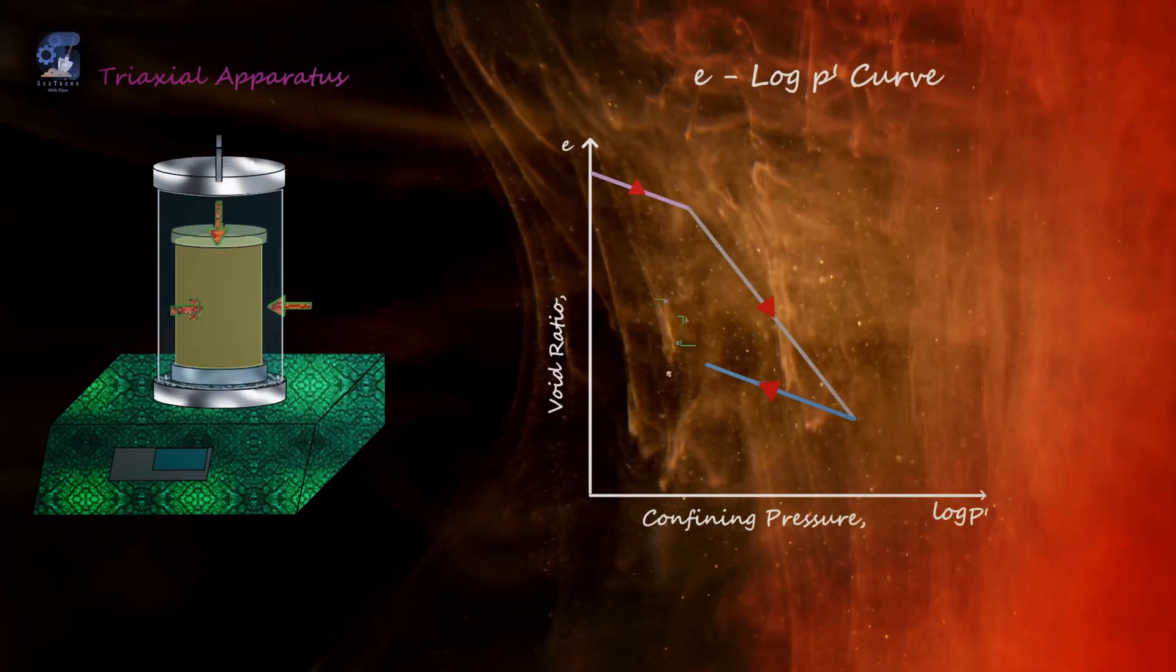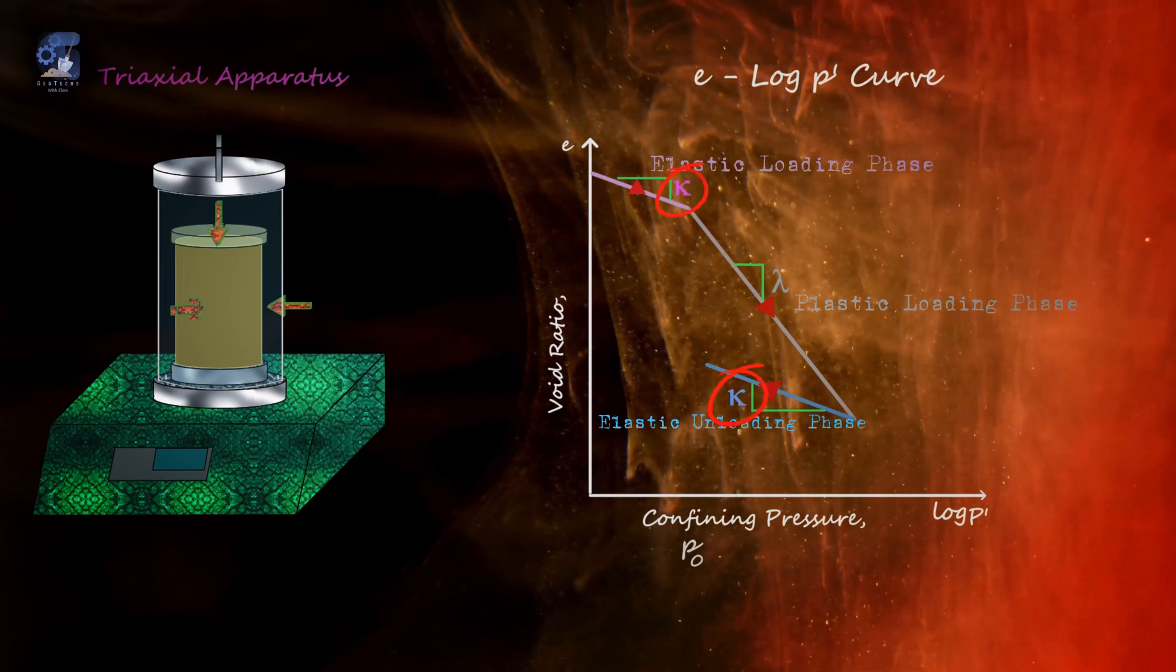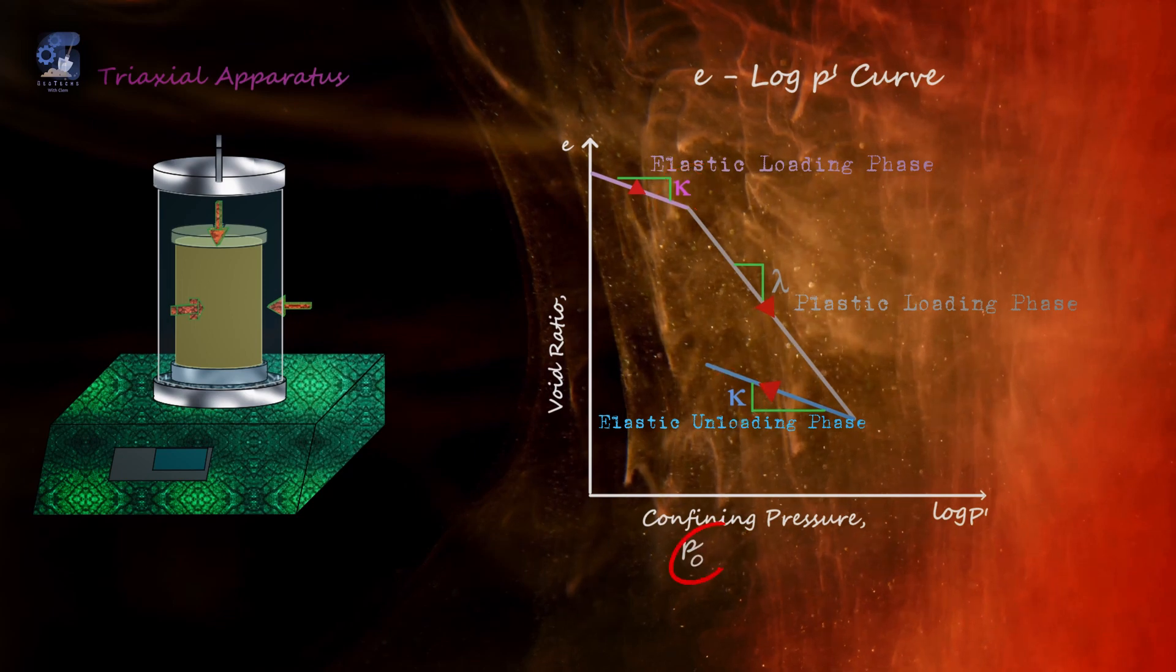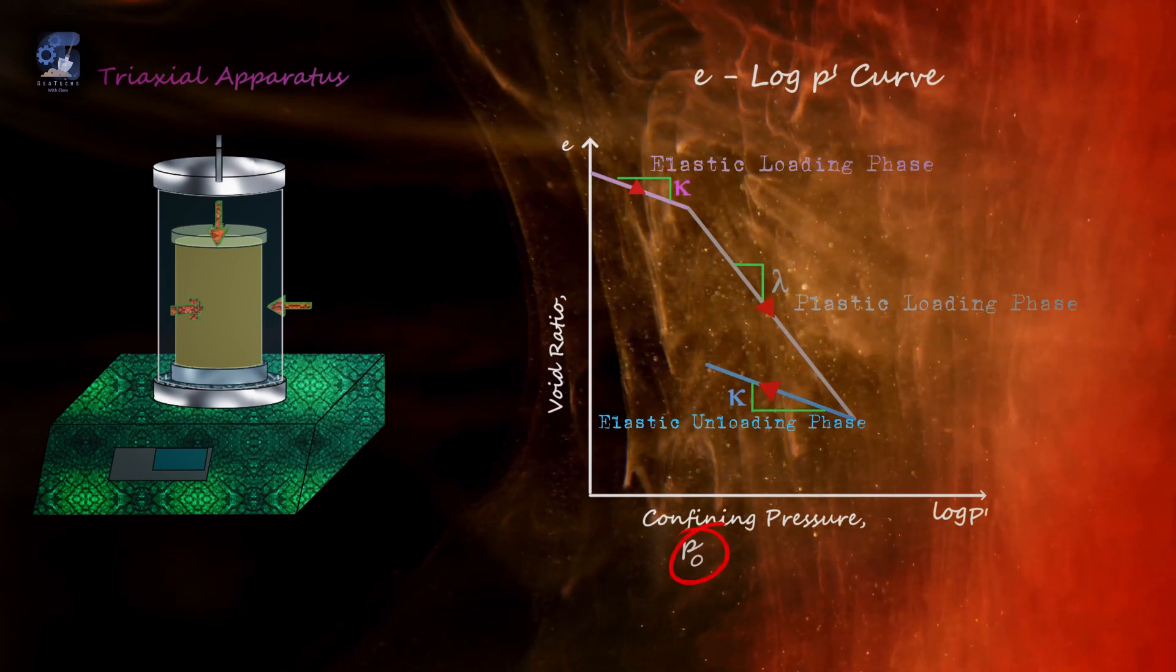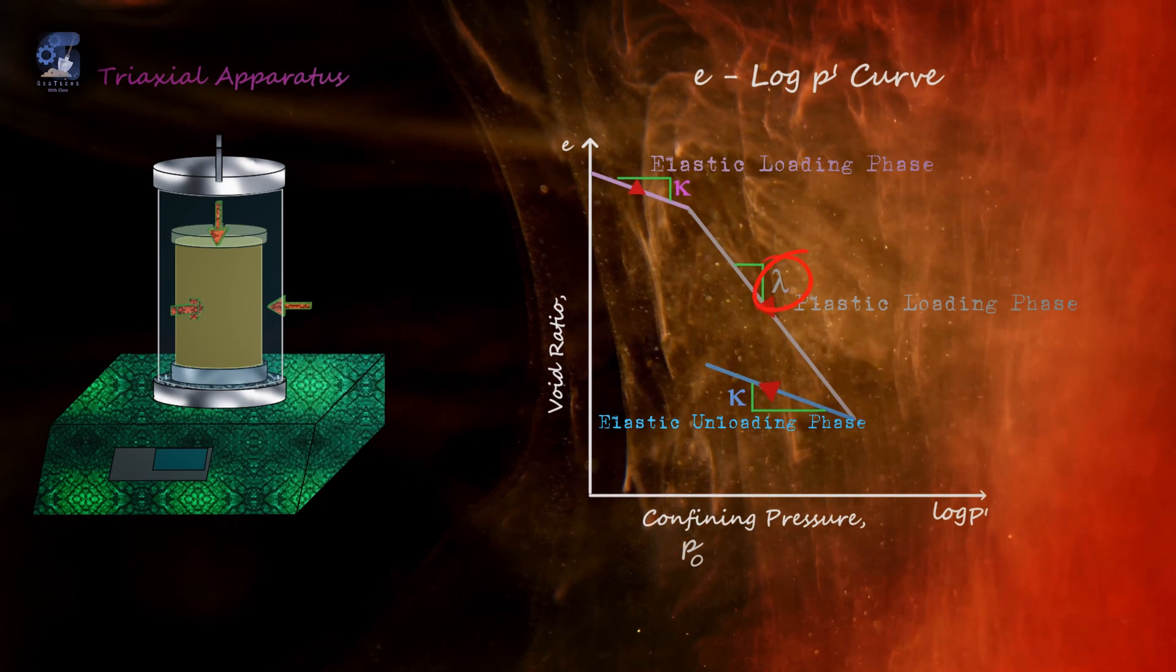There are three important soil parameters that are drawn from this curve. The elastic and rebound parameter, Kappa, from the elastic loading and unloading section. The pre-consolidation pressure, P, and the compression parameter, Lambda, from the plastic loading section.